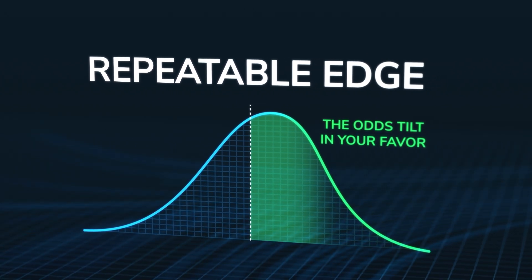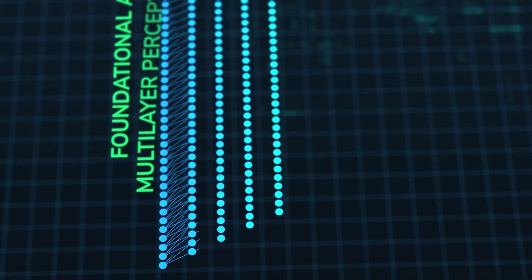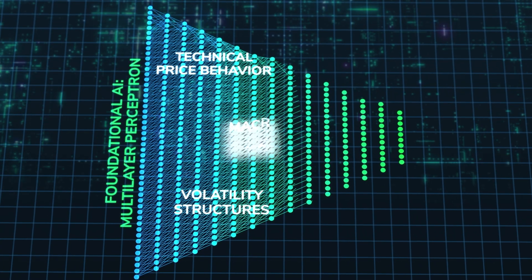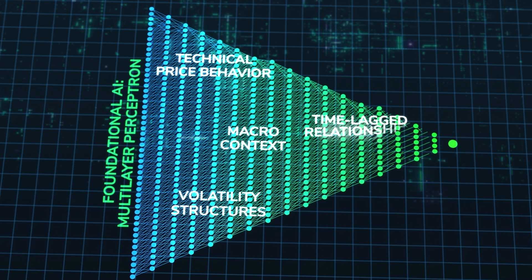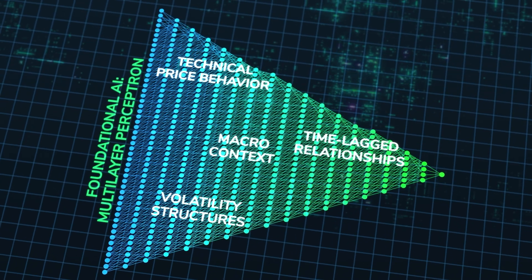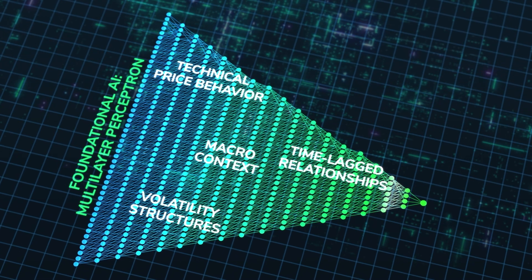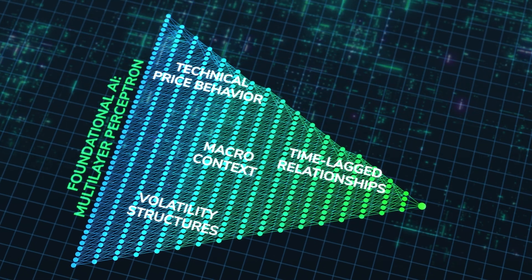To find this edge, we train the system on a very wide range of data: technical price behavior, volatility structures, macro context, and time-lagged relationships that capture how information actually diffuses through the markets, rather than all at once.